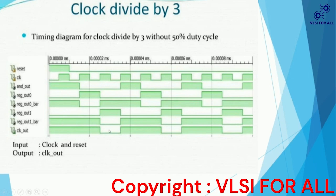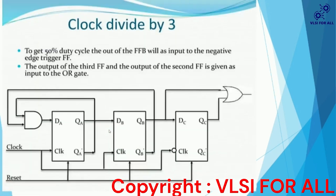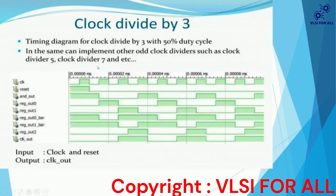To generate a 50% duty cycle, the circuit is modified. The output of flip-flop B is given as the input to a negative-edge-triggered flip-flop. The output of this second flip-flop is then fed into an OR gate. By this modification we can obtain a 50% duty cycle.